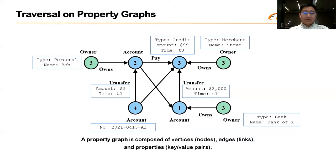A graph traversal is a process to visit vertices and edges in a graph, and we discuss traversal on property graphs, which are directed graphs in which vertices and edges can have a set of properties or key-value pairs.